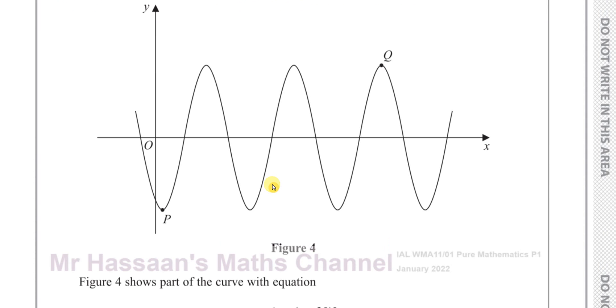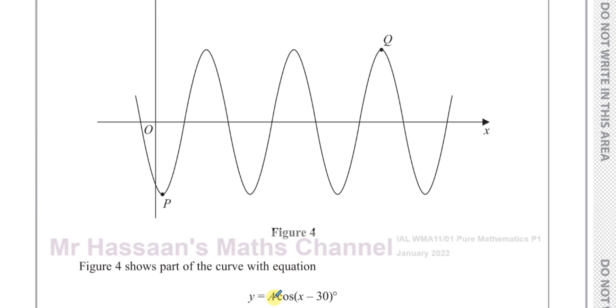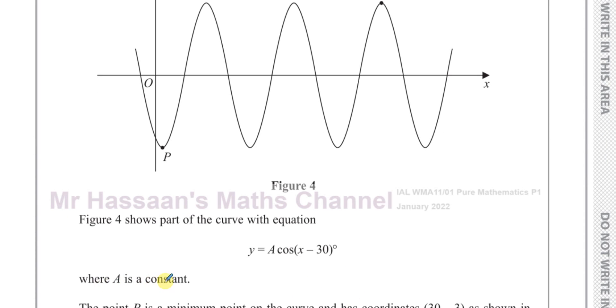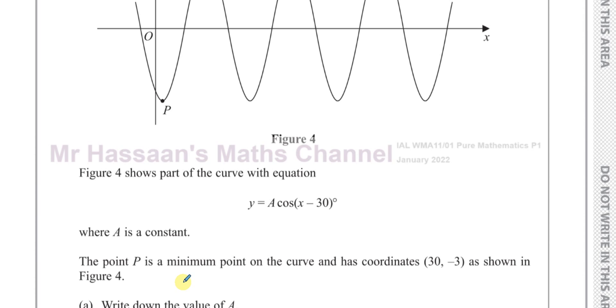Figure 4 shows part of the curve with the equation y equals a times cosine x minus 30 degrees, where a is a constant. The point P is the minimum point of the curve and has coordinates 30 and negative 3 as shown in figure 4. So that's the lowest it reaches, negative 3.